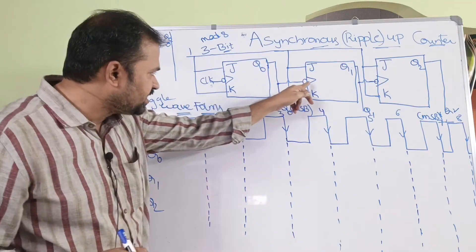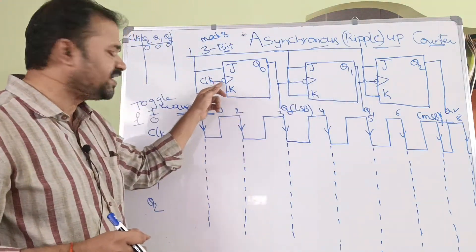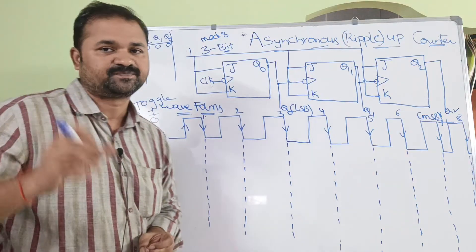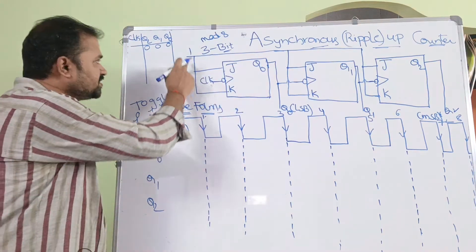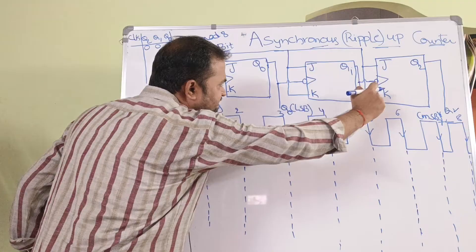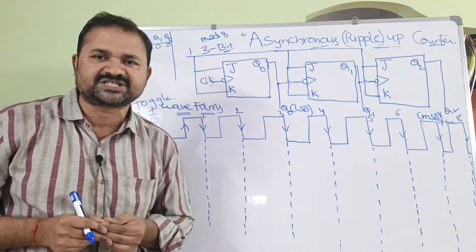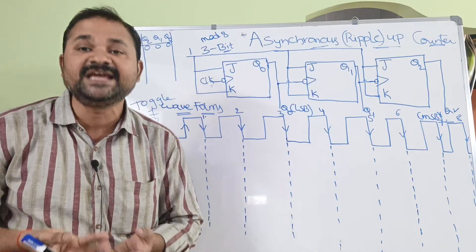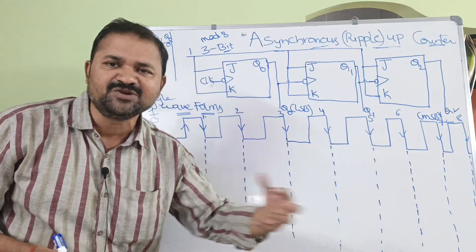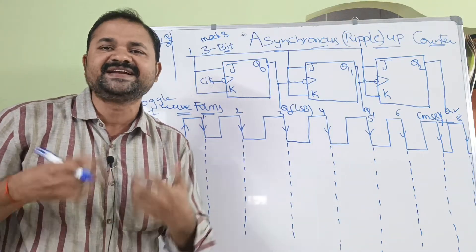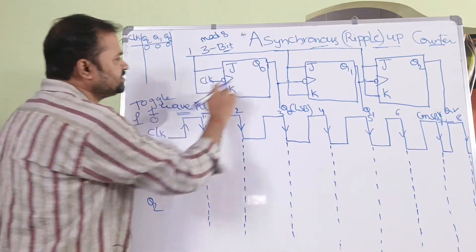Here also we have a bubble, representing the negative edge triggering. The values of J and K are both 1. Because in a JK flip-flop, the toggle will happen when J and K values are 1. Likewise, when T value is 1, the toggle operation will happen. So that is why 1 is connected to J and K inputs.